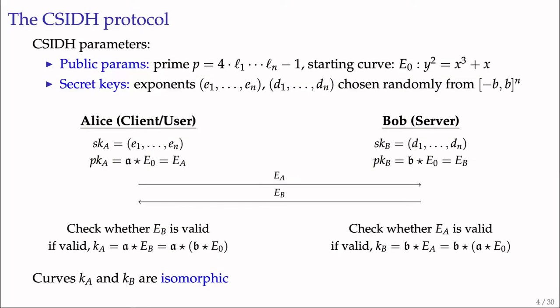For the CSIDH key exchange protocol, Alice and Bob first generate their private keys, which are secret exponents, then generate their public keys by the CSIDH group action with their private key and the starting curve. Alice sends her public key curve Ea to Bob, and Bob sends back his public key Eb. Alice and Bob then check whether the received public key is valid. If valid, they compute the shared secret Ka and Kb using the CSIDH group action. The obtained curves Ka and Kb are isomorphic.